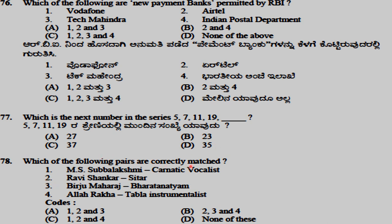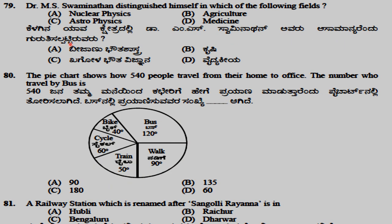Among the following pairs, Birju Maharaj is incorrectly matched with Bharatanatyam. Dr. M. S. Swaminathan distinguished himself in the field of agriculture.